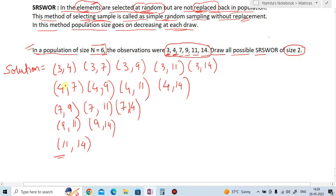The possibility of these observations - we have drawn all the possible simple random sampling without replacement of size 2. So if you see the observations which we have drawn, you can see the population is decreasing. As I mentioned in the definition, in this method the population size goes on decreasing at each draw.